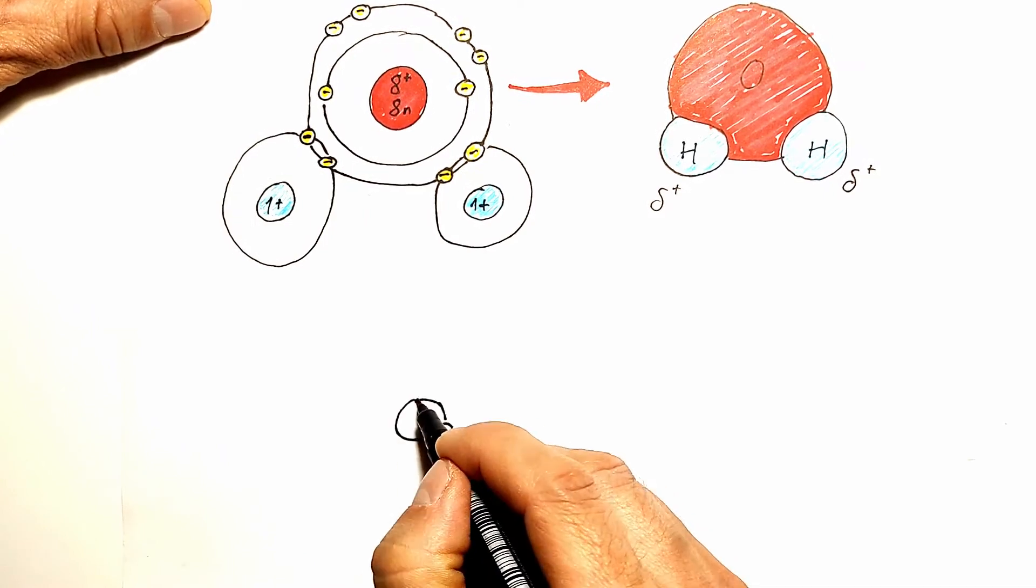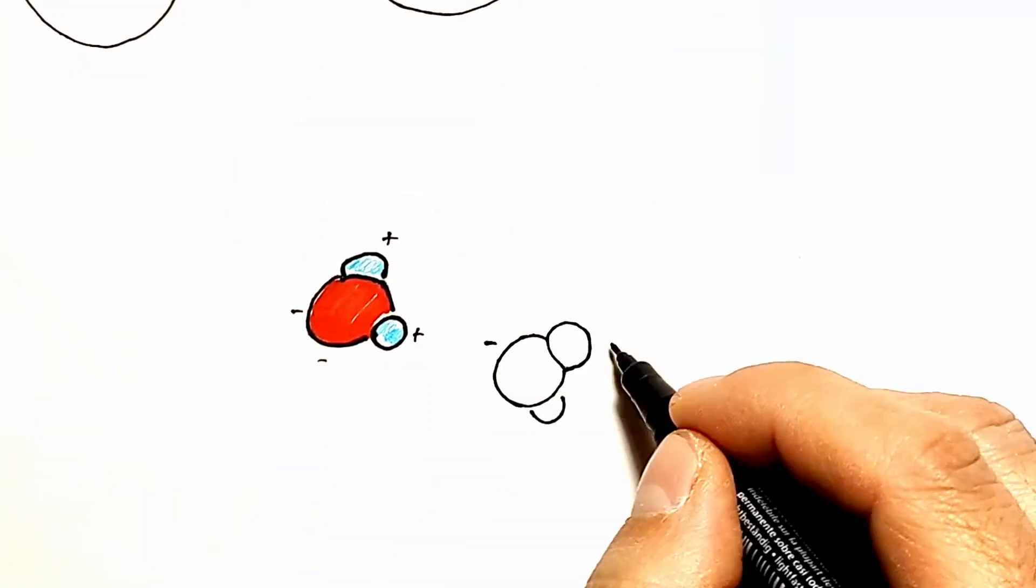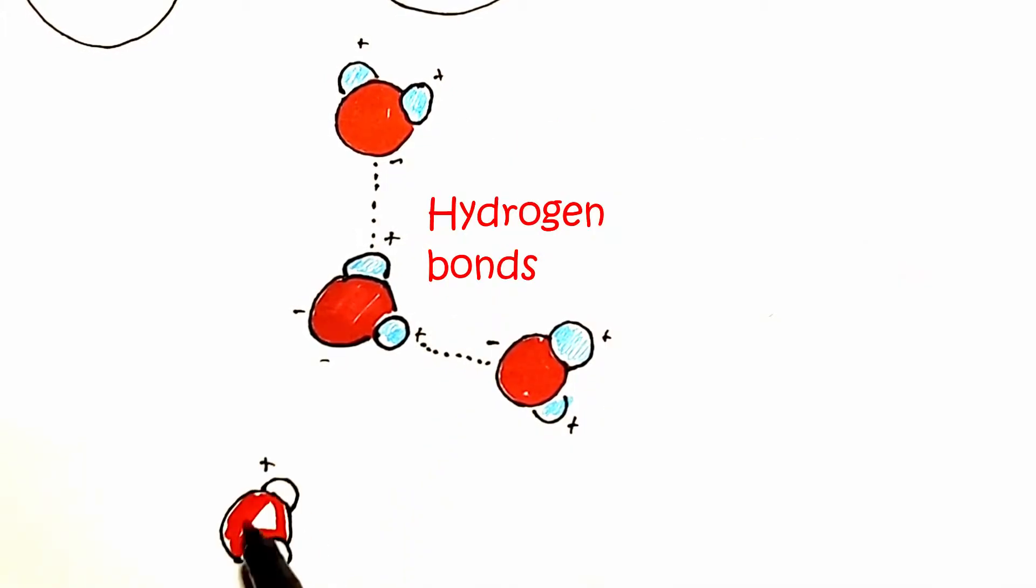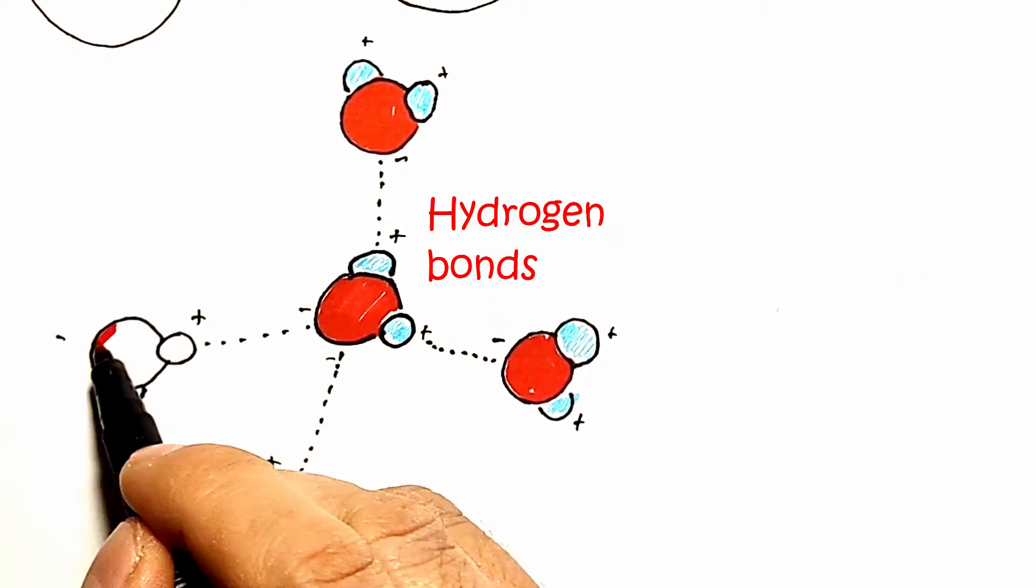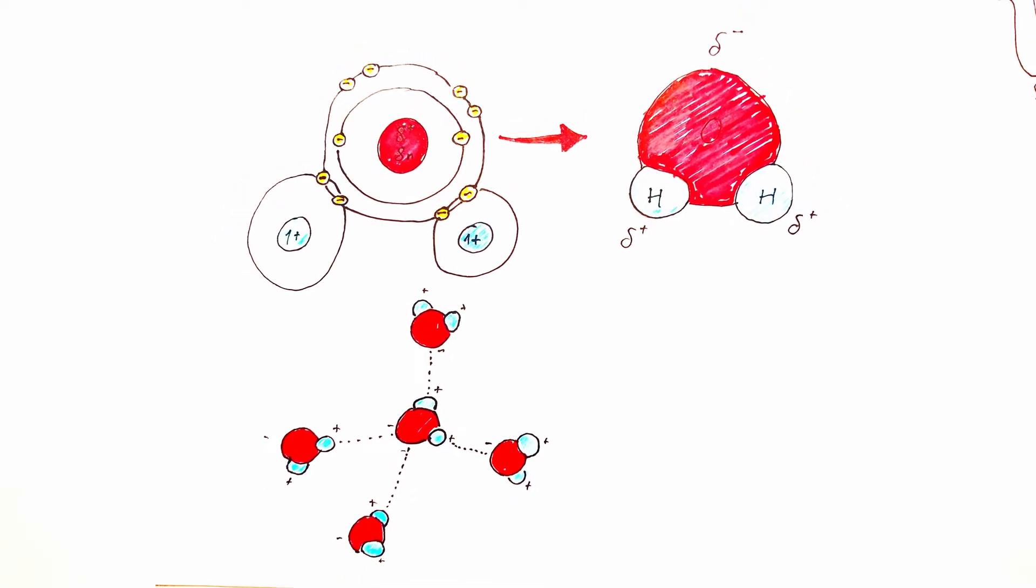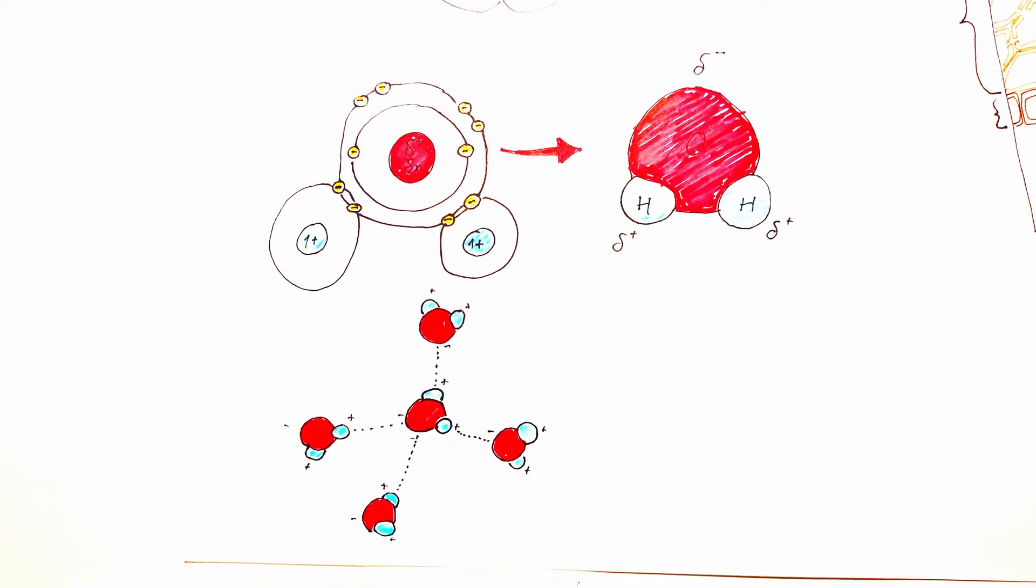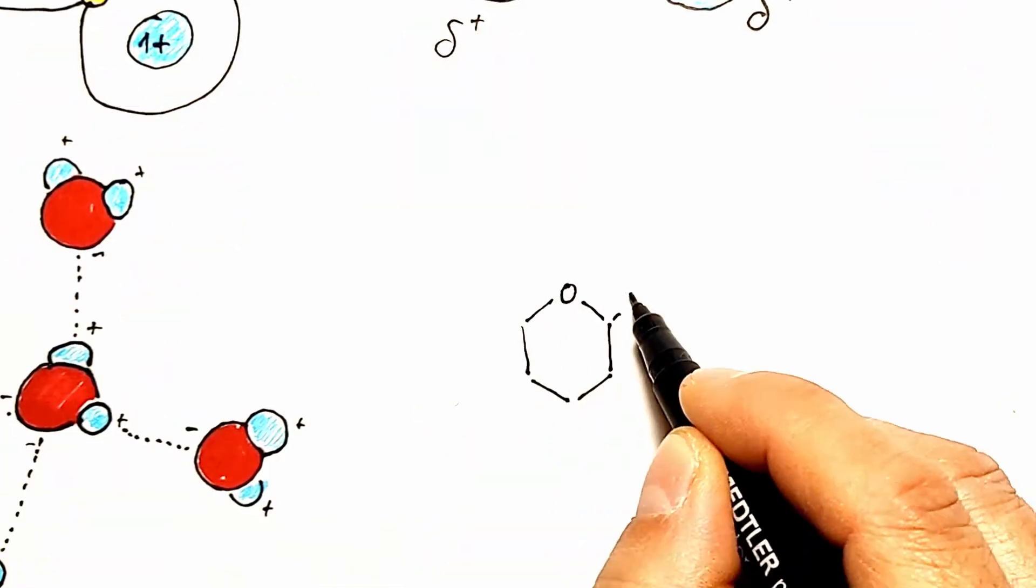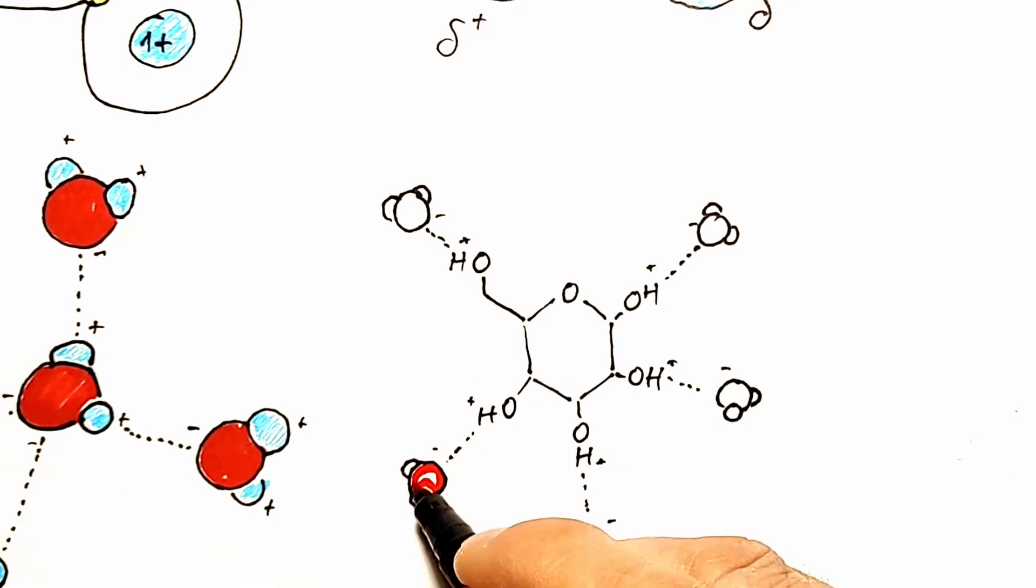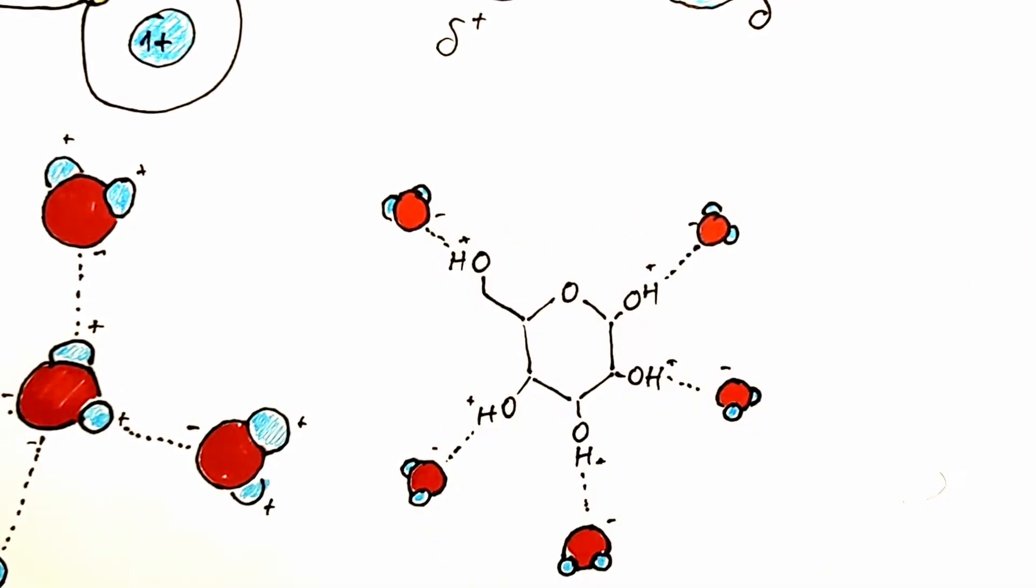When water molecules are close enough to each other, there is an attraction between the positive pole of one molecule and the negative pole of the other. This force of attraction is called the hydrogen bond. This type of attraction is also possible between water and other polar molecules, such as glucose or amino acids, but also between water and charged substances such as cations and anions.